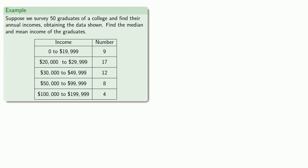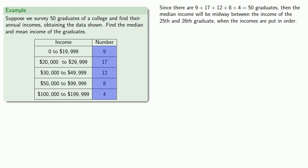One problem arises if our bins are larger than a single unit. So here, maybe we surveyed 50 graduates of a college, and they reported their annual income, and we might get the following data. We'll still try to find the median and mean income of the graduates. First of all, we notice that there are 50 graduates. So that means if we put the income of the graduates in order, that median will be midway between the incomes of the 25th and 26th graduates. Now the 25th and 26th graduates will be someplace in this second bin between $20,000 and $29,999. That's because the nine lowest incomes are in the first bin, the next seventeen incomes are in the second bin, and the 25th and 26th will be among the next seventeen.